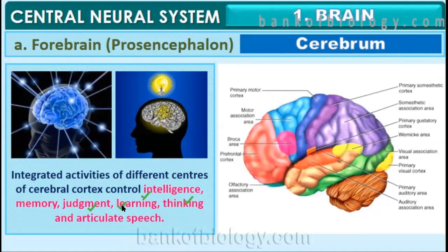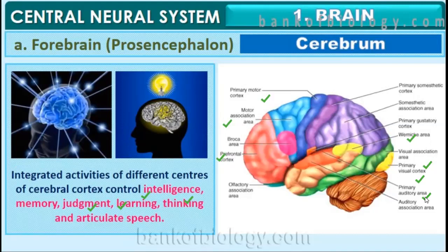There are many regions present in the cerebral cortex: motor association area, Broca's area, prefrontal area, visual association area, primary visual cortex, primary auditory area, auditory association area, and sensory and motor areas. When they work in an integrated and properly coordinated manner, our thinking, intelligence, learning, judgment, and speech are controlled. The cerebral part of the brain plays a major role in the coordination of integrated activities.